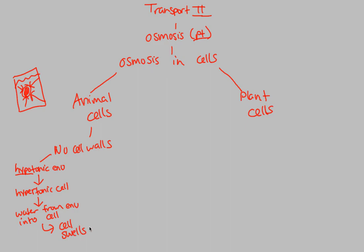The cell swells, and eventually this will actually lead to the cell lysing, or lysis — it bursts. This is an overall consequence of no cell walls, and this is a problem that animal cells face. If it's put in a hypotonic environment, all that water is going to rush into that hypertonic cell. You might think the cell is mostly water — it is a good amount of water, but not nearly as much as that environment — causing the cell to swell and then burst.